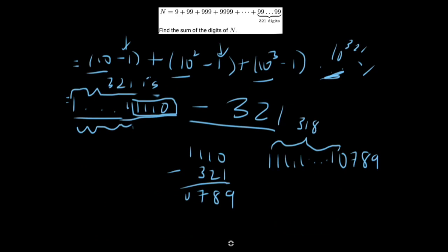To find the sum of the digits, we add all of those: 318 (from the 318 ones) plus 0 plus 7 plus 8 plus 9, which gives us our final answer of 342.